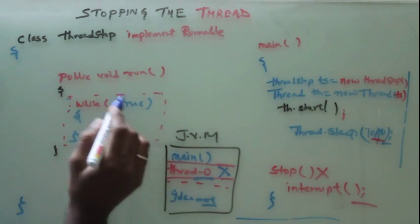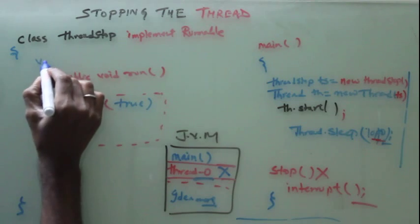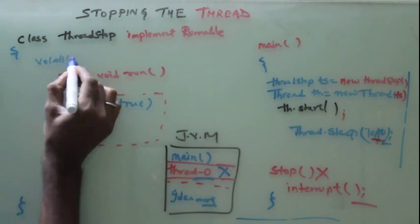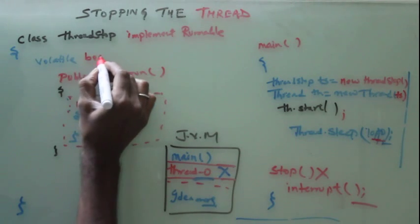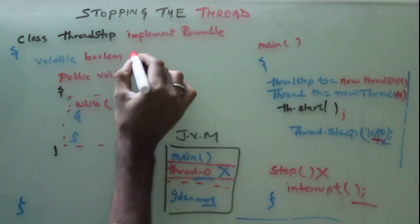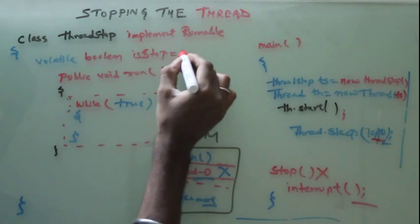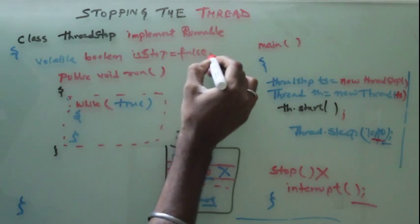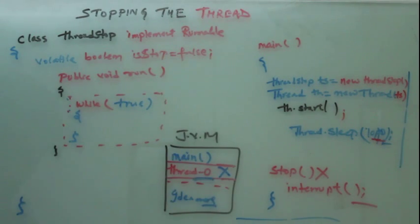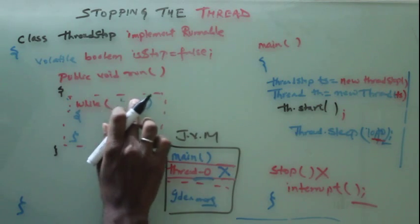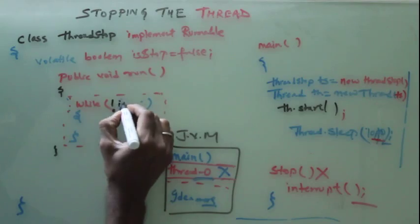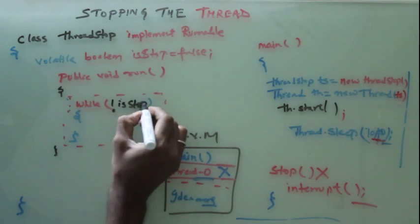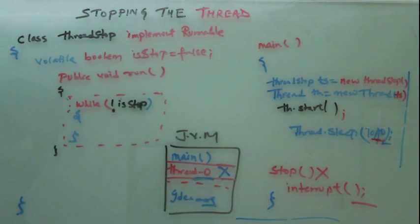So for true, what we will do, we will declare a volatile variable. Volatile boolean isStop equal to false. And we will replace this true with not of isStop.